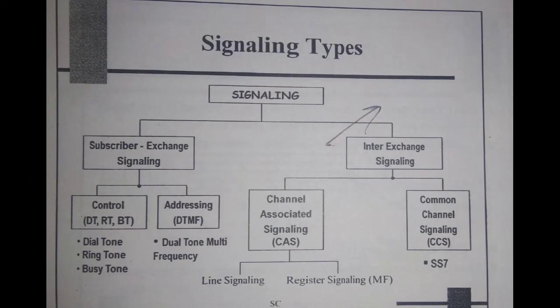The types of signaling are described under subscriber-exchange signaling and inter-exchange signaling. For inter-exchange signaling, since two exchanges are interconnected, the signaling types are channel-associated signaling and common channel signaling (CCS), under which we have SS7. Under channel-associated signaling there are line signaling and register signaling. For subscriber-exchange signaling there are control and addressing. Under control there are dial tone, ring tone, and busy tone, and addressing uses dual tone multi-frequency (DTMF).